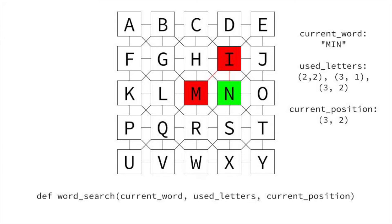Some of this information could be redundant. If we made used letters a list, for example, we could reconstruct everything from that list — we know what's in cells 2,2 and 3,1 and 3,2. However, we'd like used letters to be a set later for faster lookup, and reconstructing the string each time is a pain anyway. Just keep in mind there are other directions we could go.